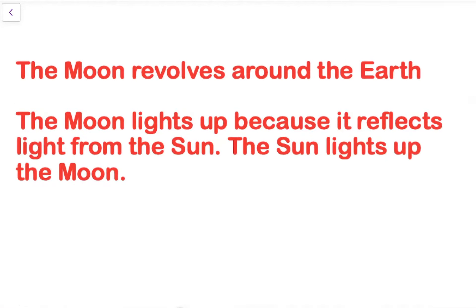For your notes, please write this down. The moon revolves around the earth, and the moon lights up because it reflects light from the sun. The sun lights up the moon. So the moon does not actually make its own light — it is simply reflecting light from the sun.